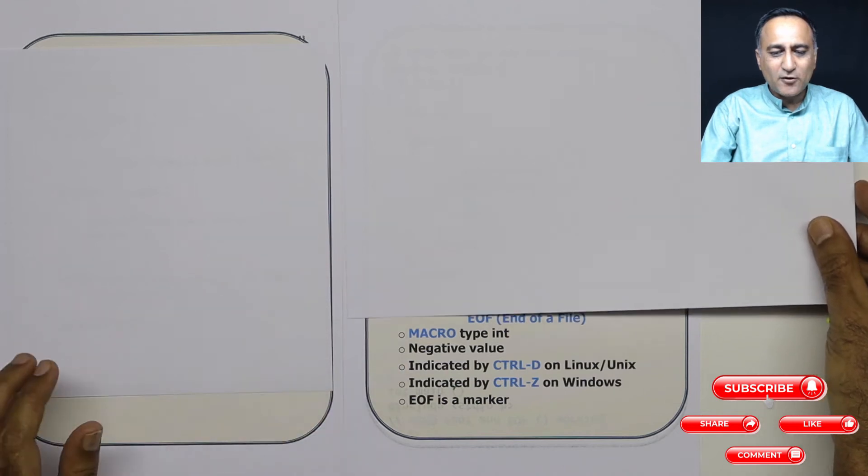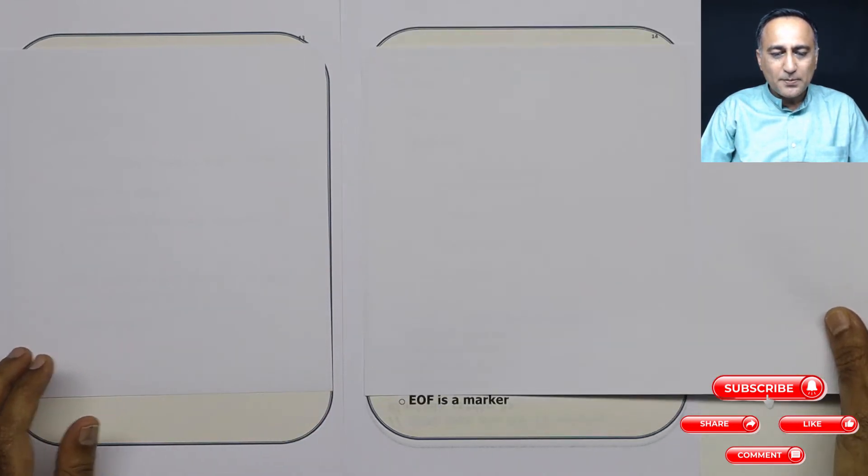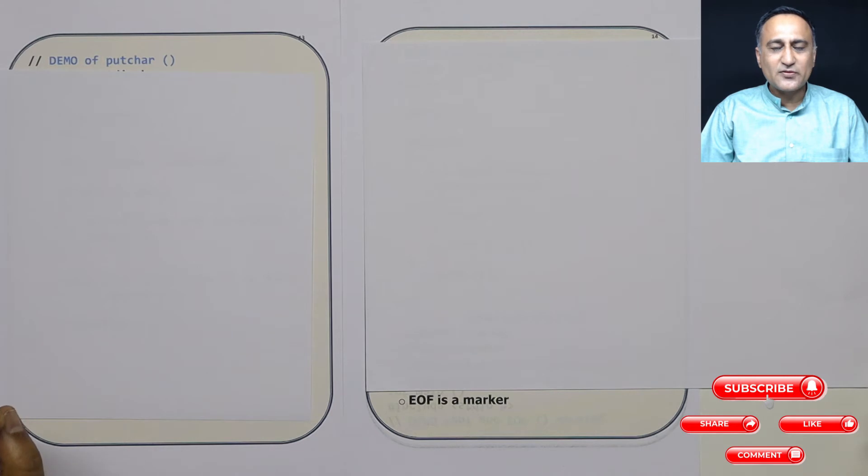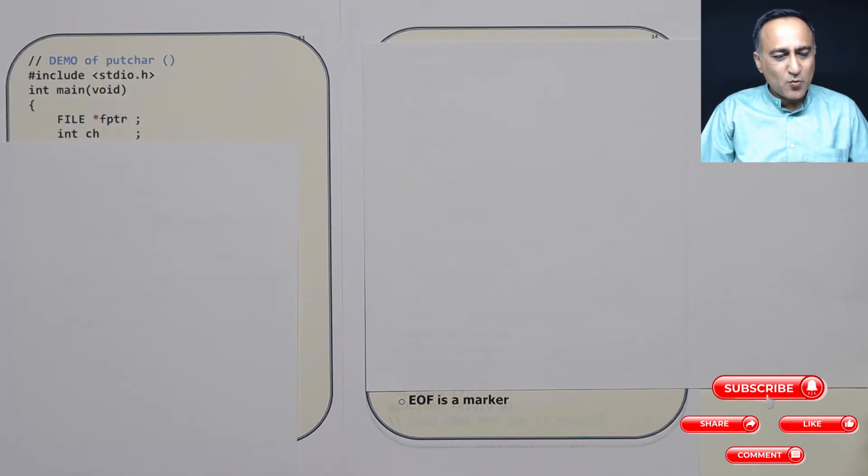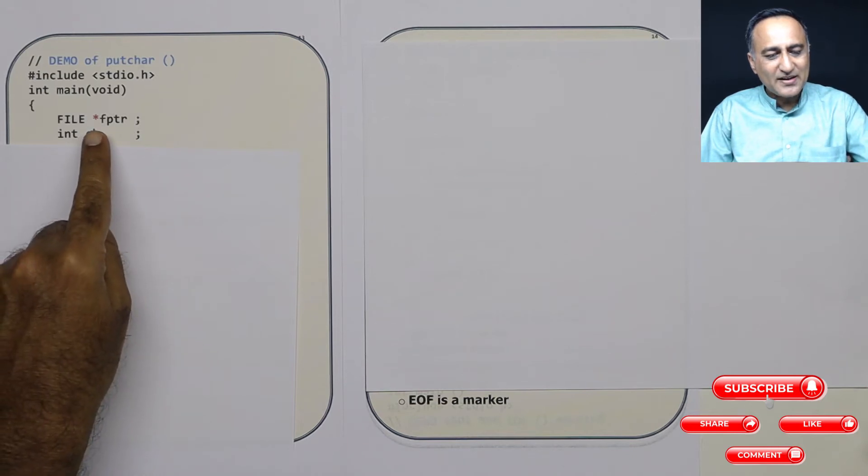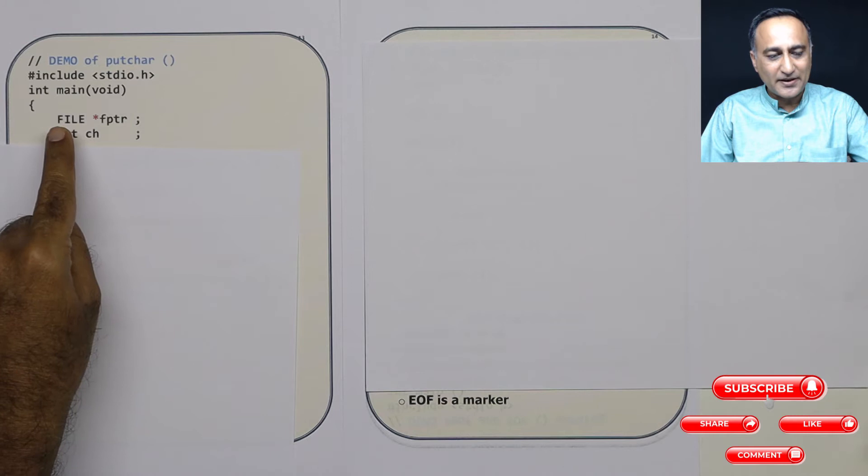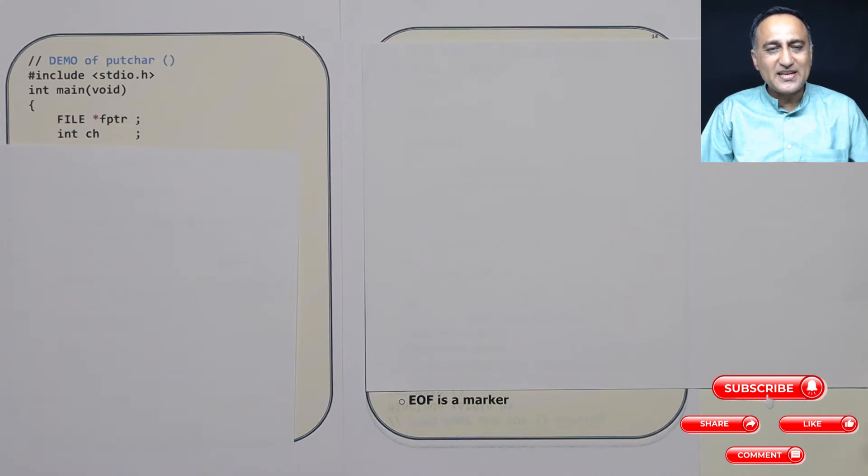So in order to understand end of the file, let's take a look at a small piece of code. On my left, I'm going to demo a piece of code using a function called putchar. Putchar stands for put a character onto the screen. So let's see what this program is. First thing what I have done here is, I have defined a file pointer fptr, which is a pointer to a file type of a structure or a file type of a data type.